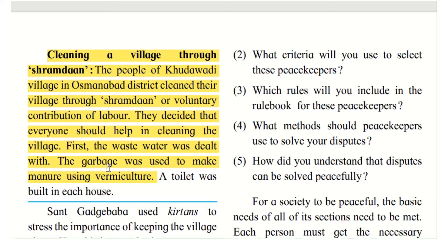So the garbage is cleared and you also have manure - it becomes a two-way effect. A toilet was also built in each house, because people may have been defecating in open places. They ensured every house in the village had a toilet. This is how they solved the problem of garbage and the whole village being dirty, through community effort where all the people helped each other.